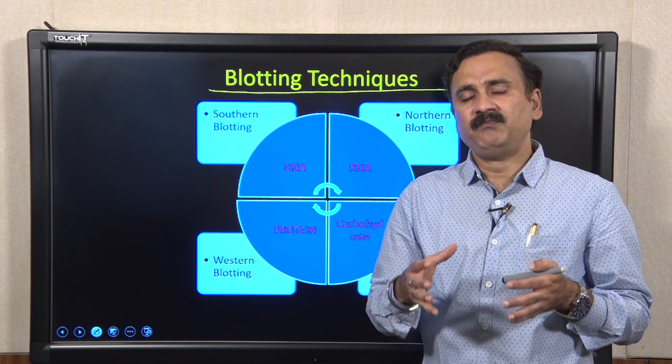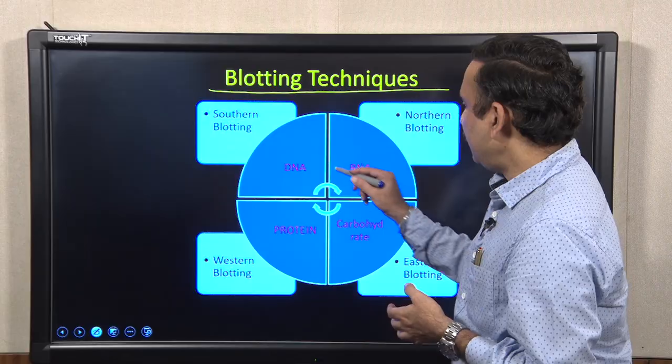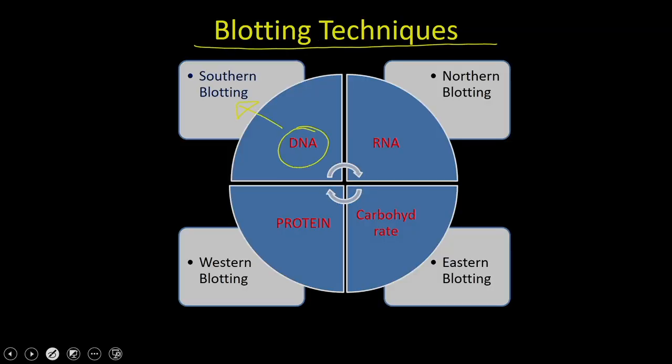Depending on the biomolecule, blotting techniques can be of multiple types. If it is DNA, the blotting technique is called Southern blotting. If it is RNA, it is called Northern blotting. If it is a protein, the technique is called Western blotting. In some cases, people also use the term Eastern blotting, which refers to blotting glycoproteins or lipoproteins onto a membrane to detect carbohydrate or lipid moieties on those proteins.